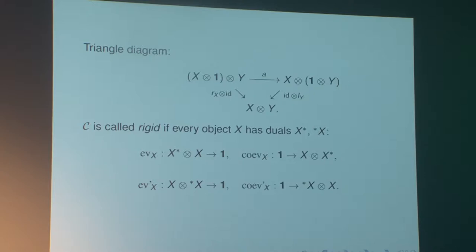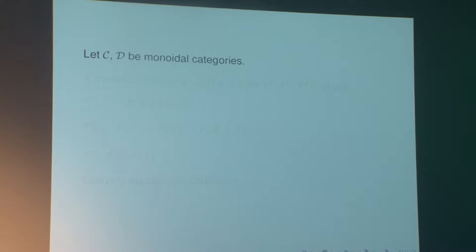A very simple example: the category of vector spaces over a field K is a monoidal category with tensor product over the base field and unit object the base field itself. But it is not rigid. However, the category of finite dimensional vector spaces is a rigid monoidal category.